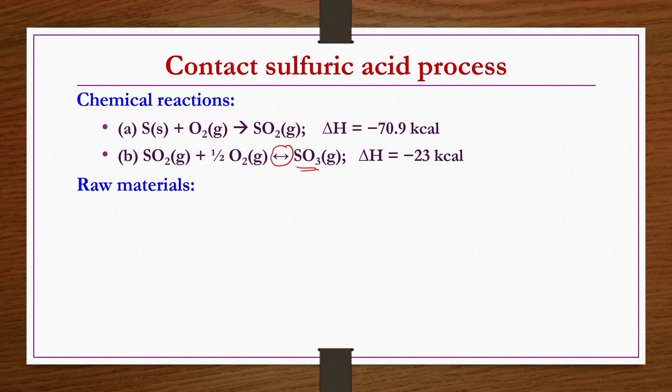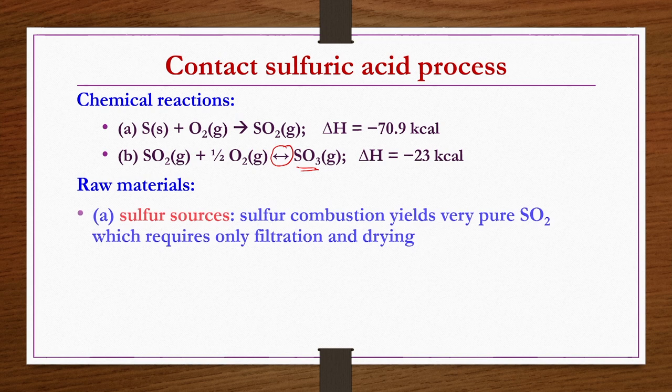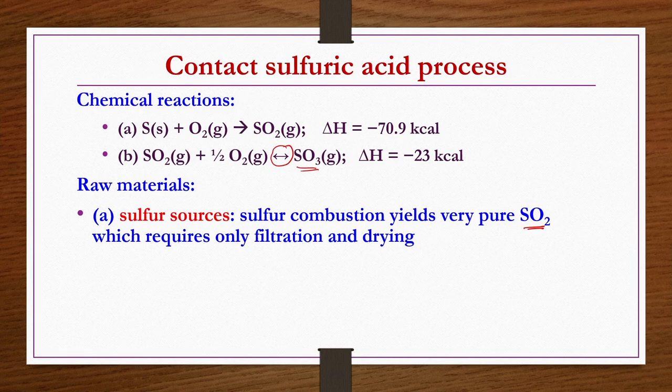Raw materials: natural or elemental sulphur can be used if available. Sulphur combustion produces very pure sulphur dioxide which requires only filtration and drying. However, not many countries have sulphur resources that can be mined — including India — so we depend on sulphur from other types of available processes.